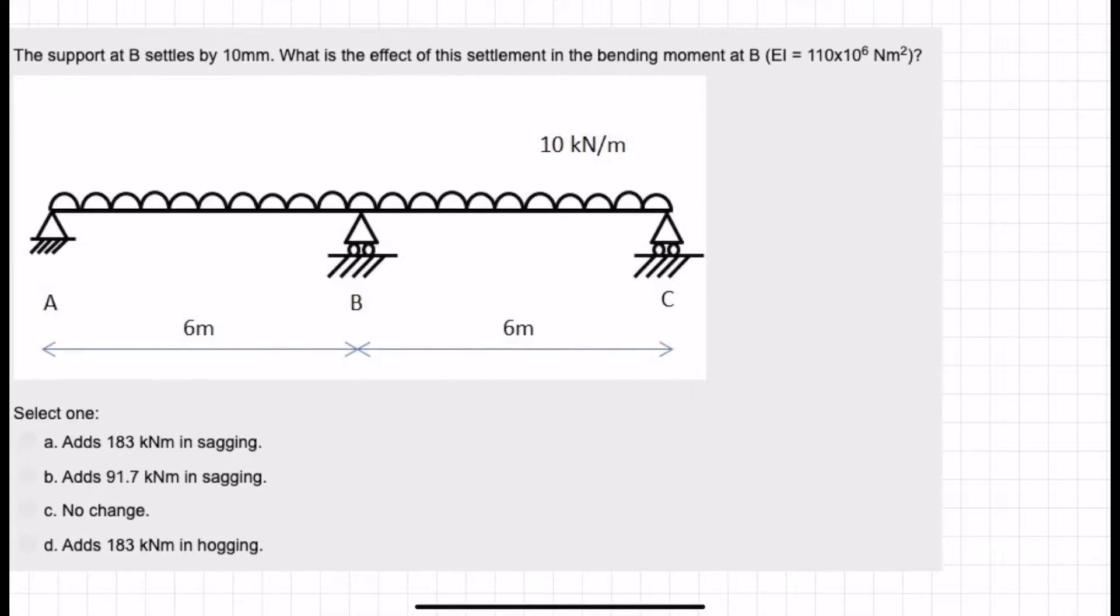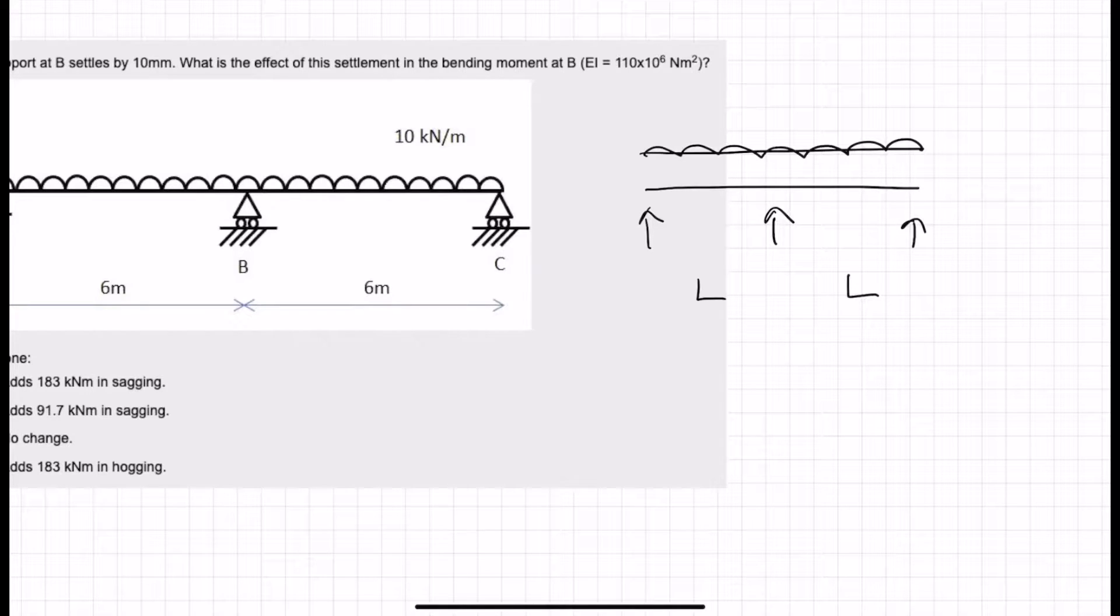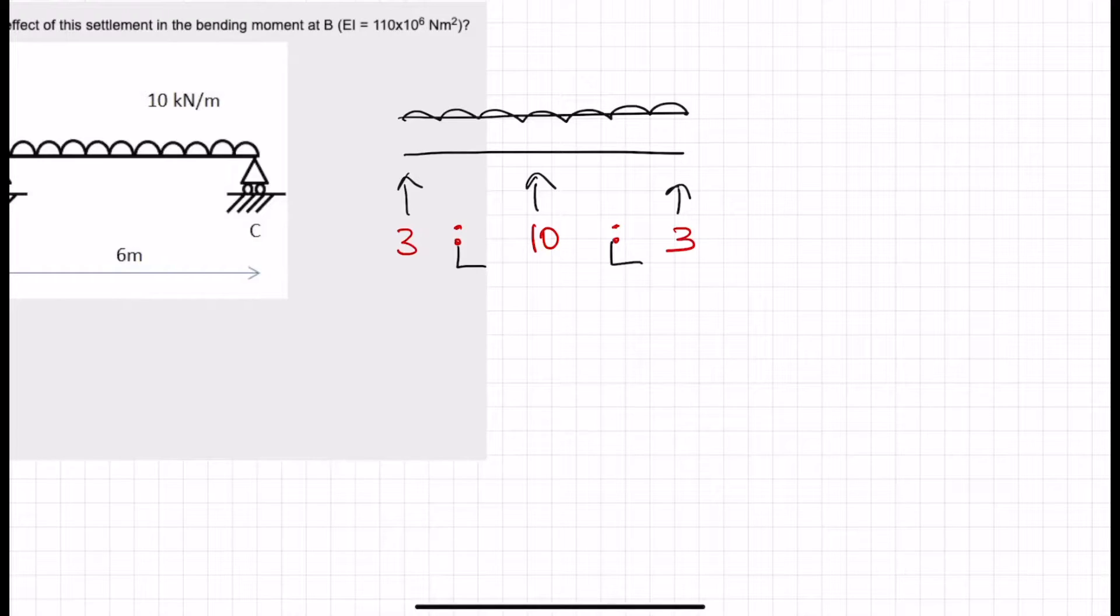As this question wants us to know the effect of the settlement in the bending moment at B, we need to know what B is currently and what B will be afterwards. So let's find out the current situation. If you have a two-span beam in general, and each of these are the same length, and you have a UDL all over the top, the ratio of the reaction forces is actually 3, 10, 3. You can actually prove this for yourself using virtual work. It's going to be quite a similar method to what we are doing to solve this question. But that's just a freebie for you.